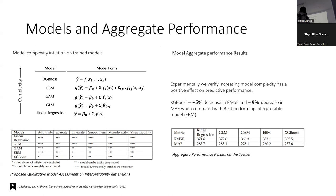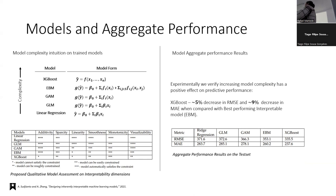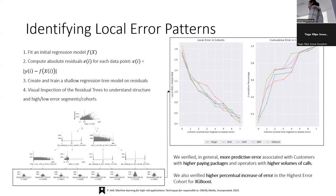XGBoost doesn't have a nice additive model form like the interpretable models. To visualize the effects of each predictor, we would have to use an approximation such as an ALE plot. When we look at the performance of each method, we find that in this application the interpretable methods lagged a bit — there is a decrease of 5% in RMSE and 9% in MAE when compared with our best-performing interpretable approach. If this were the only dimension of our responsible AI evaluation, we would simply say the interpretable approaches are not as good and take the black box model to production. But can we quantify whether we gain something in other dimensions by using an interpretable model?